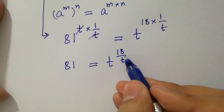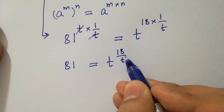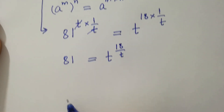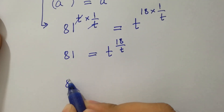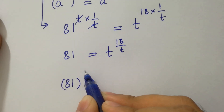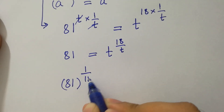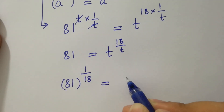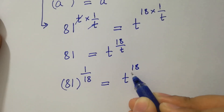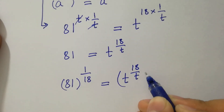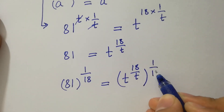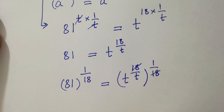To cancel this 18, take power 1 over 18 on both sides. 81 to the power 1 over 18 equal to t to the power 18 over t, to the whole power 1 over 18, where 18 cancels.